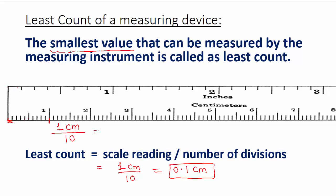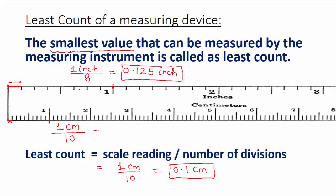On the other side of the ruler there is an inch scale. Let's find the least count of this inch scale. From 0 to 1 inch, the scale reading is 1 inch, and this 1 inch is divided into 8 divisions. So 1 divided by 8 equals 0.125 inch. So 0.125 inch is the least count of this inch scale.